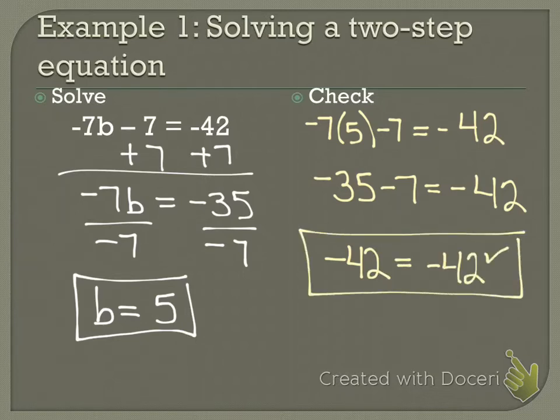You see, my check has three steps. Make sure on your check you don't just say negative 42 equals negative 42. You have to actually show me the work. Did anybody get that right before I gave the answer? Good.